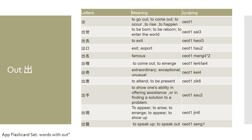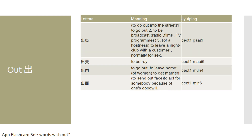To appear in Cantonese is 出現 (cheut yin). To go out in Cantonese is 出街 (cheut gaai) — literally, to go out into the street. To betray in Cantonese is 出賣. To leave home is 出門. If you wish to study these words in our app, please look at the flashcard set named Words with Out.